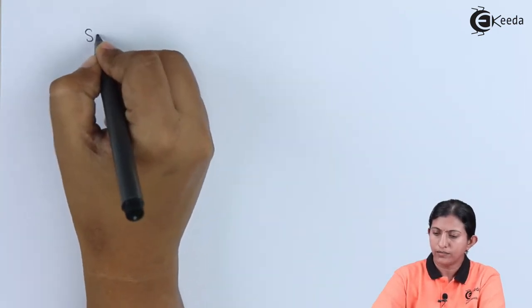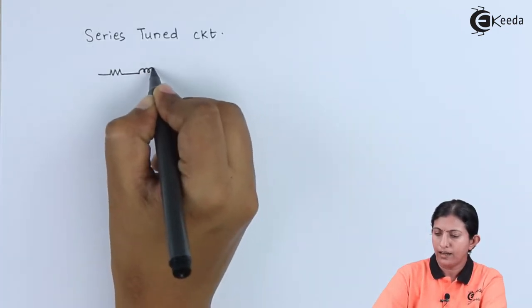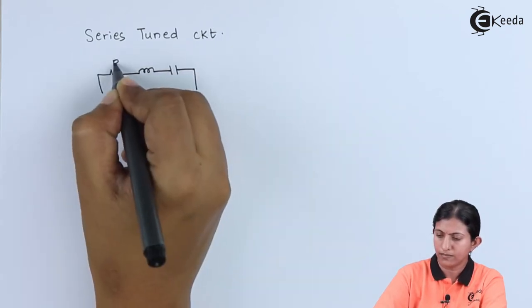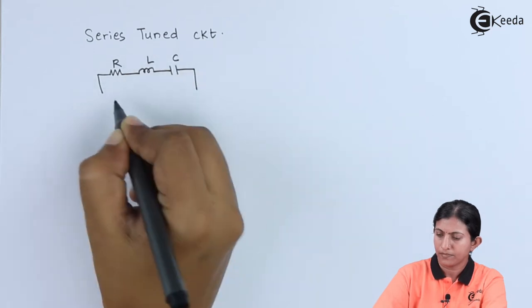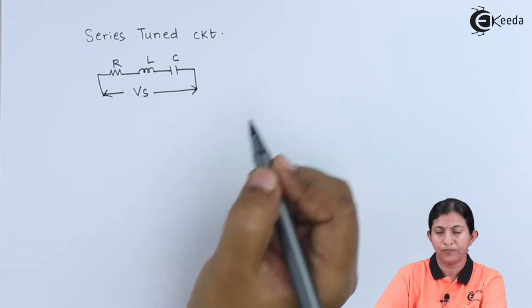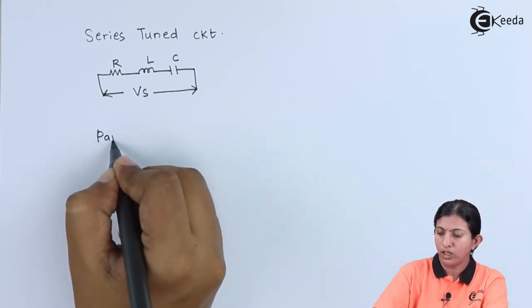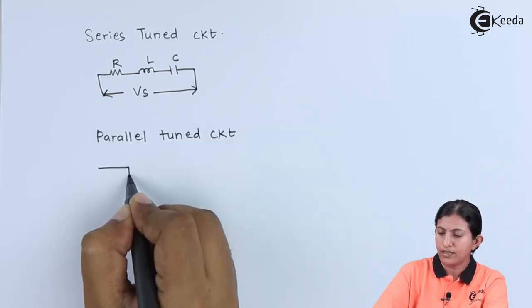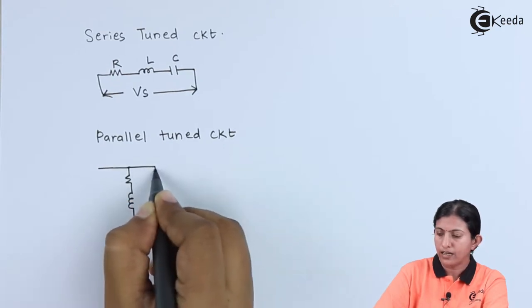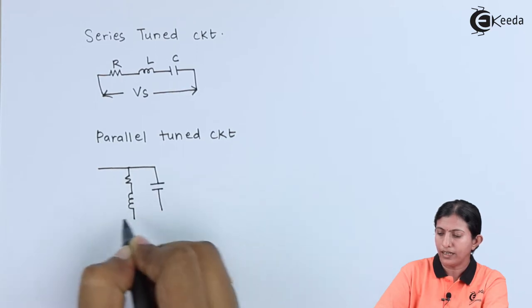There are two types of tuned circuits: series tuned circuit and parallel tuned circuit. In a series tuned circuit, R, L, and C are connected in series, to which we apply the AC input signal. In a parallel tuned circuit, resistor R and L are connected in series and the capacitor is connected in parallel.